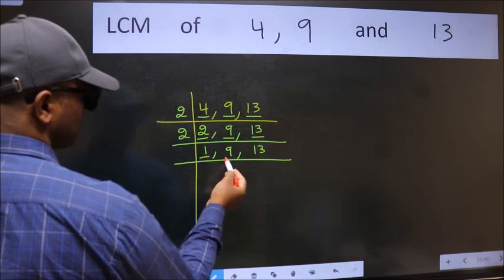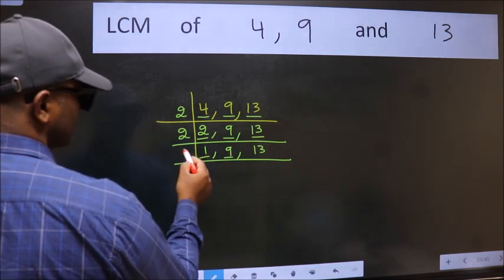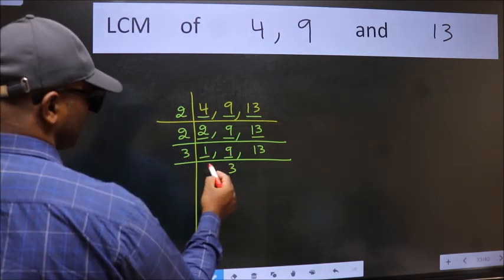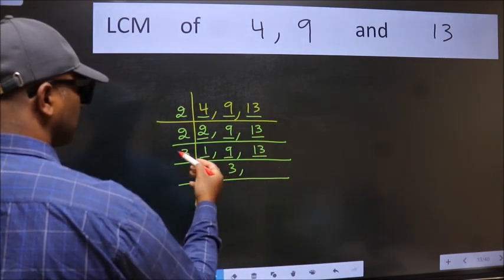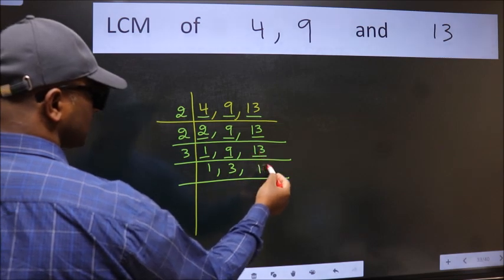So focus on the next number 9. 9 is 3, 3's 9. The other number 13, not divisible by 3, so we write it down as it is.